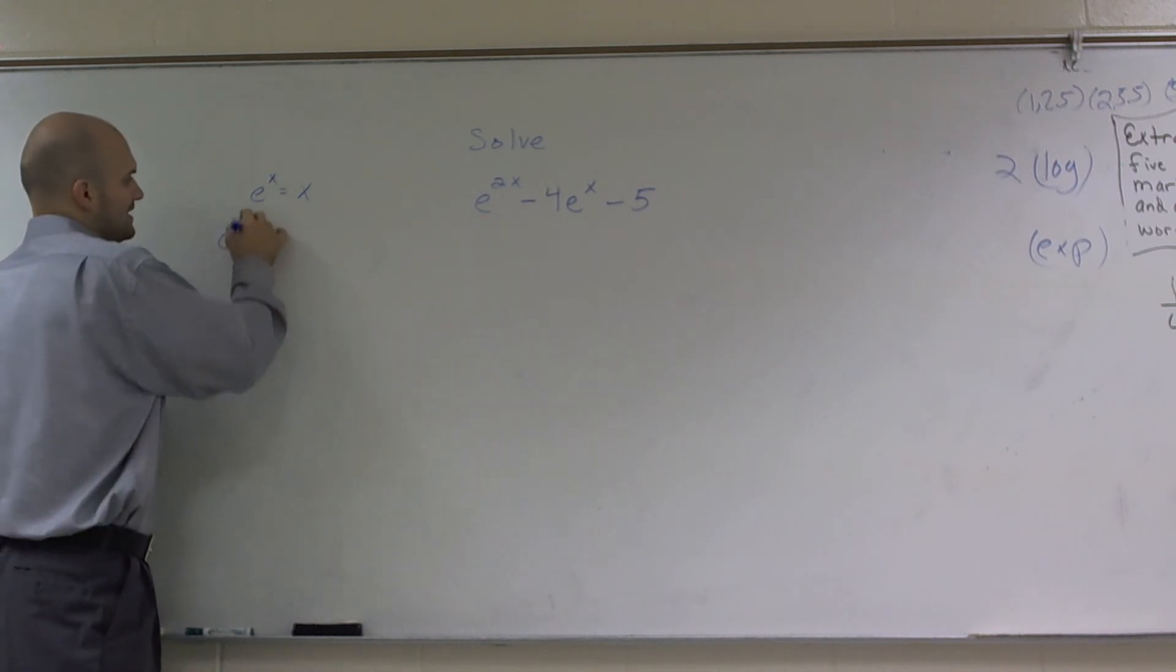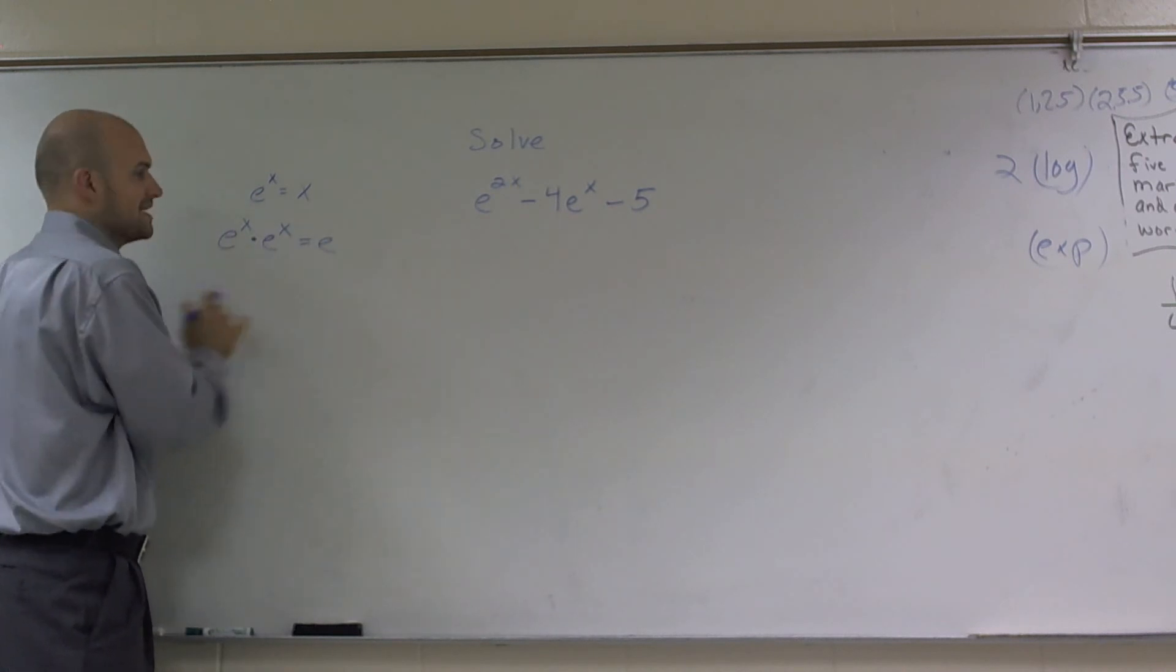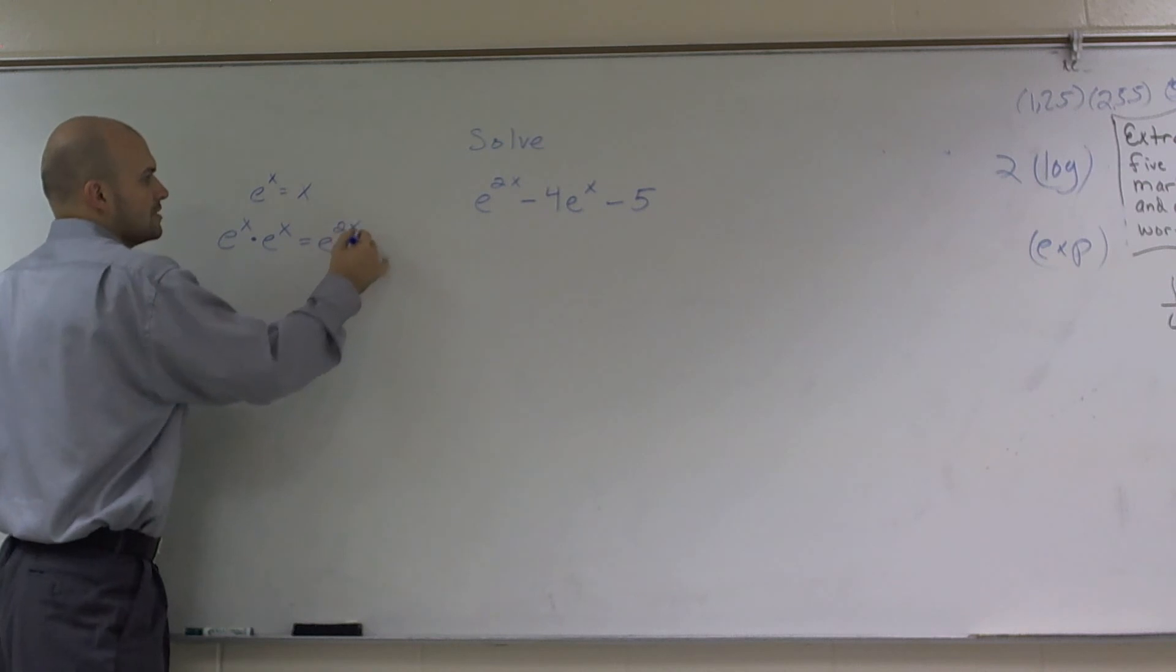One thing I'll also remember, if I did e to the x times e to the x, that would be equal to e to the... remember, when you multiply numbers with exponents, you add the exponents. So that would be e to the 2x.